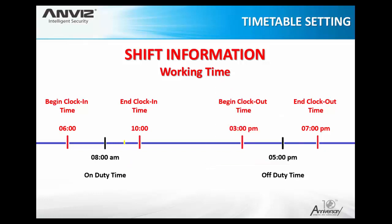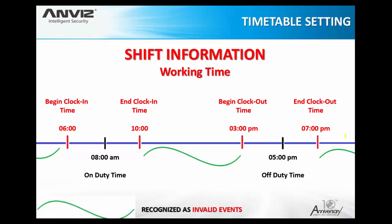These are the limits to clock in and clock out. What happens if a record or event falls outside those limits — for example, if I clock in at five-thirty in the morning, or clock out at two in the afternoon, or after seven in the evening? The system will recognize it as an invalid event. The software will not understand it; it will be recorded as an invalid record or an access control record, but it will not be used in the time attendance report.